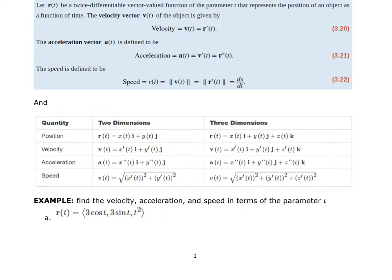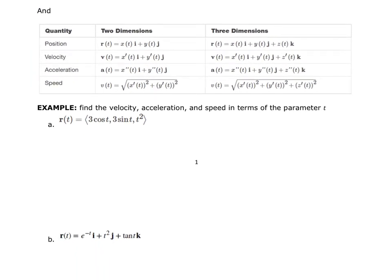If we're asked to find the velocity, acceleration, and speed in terms of the parameter t — not evaluating at a specific t value — we just apply the formulas. Finding the first derivative r prime gives us the velocity vector. For a function with 3cos(t), 3sin(t), and t² components, the derivative gives: negative three sine of t, three cosine of t, and two t.